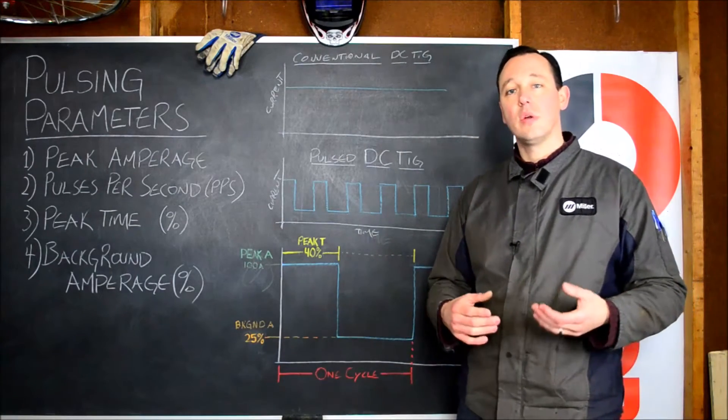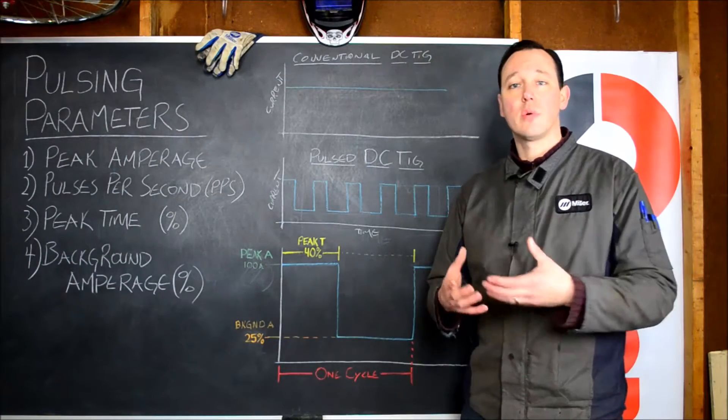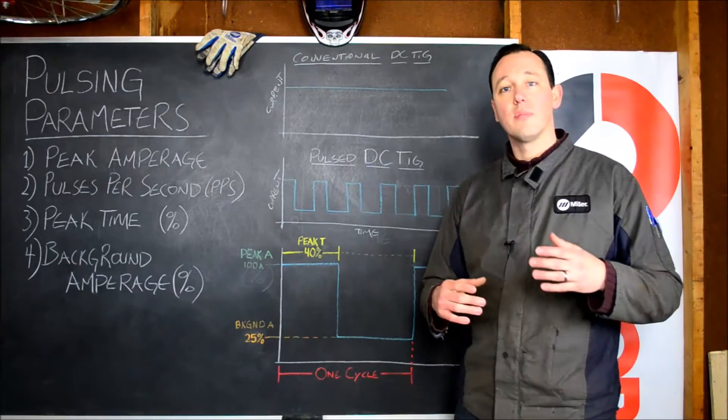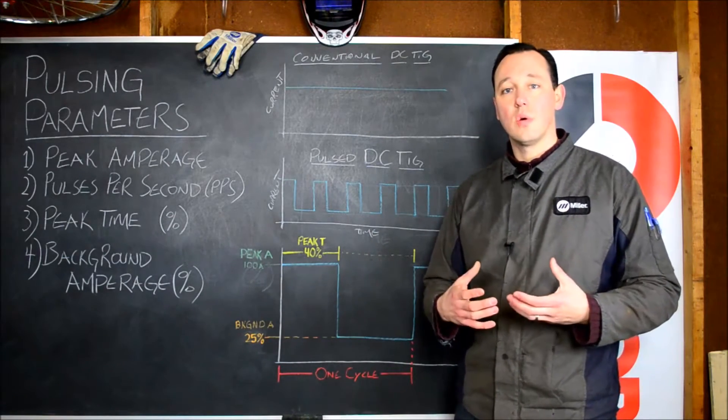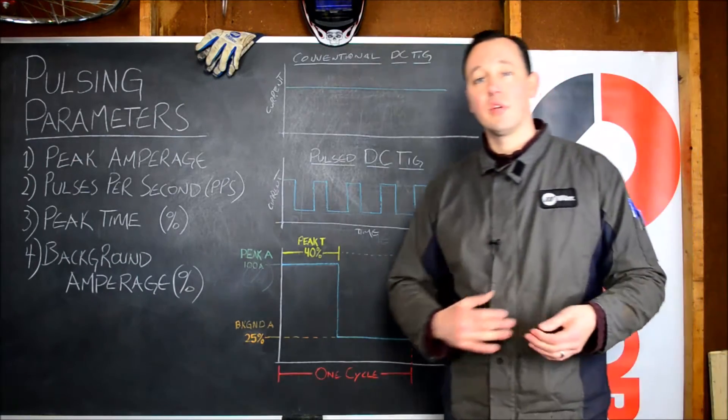At lower frequencies you can employ it for aesthetic reasons. If you want a very uniform ripple appearance on your bead, at even lower frequencies it can be used to really have great control over welding very thin material, and we'll get deeper into that in another video.